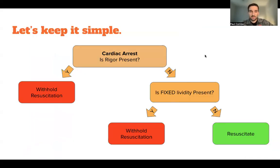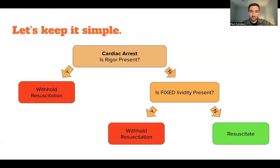All this can get really confusing — sometimes we miss the forest for the trees — so let's keep a very simple algorithm in mind. Patient in cardiac arrest: Is rigor present? Yes — withhold resuscitation, they're dead. No rigor? Now look for fixed lividity. Is fixed lividity present? Yes — we can hold resuscitation. No? Then we have to resuscitate this patient. And this will get you through 99.9% of all your cardiac arrest calls.